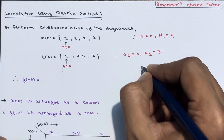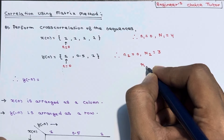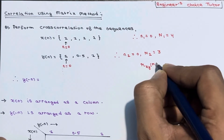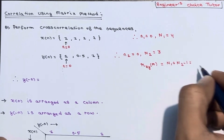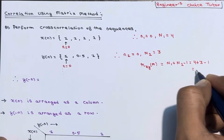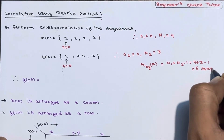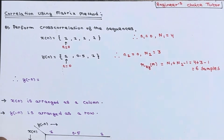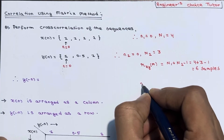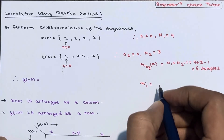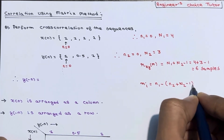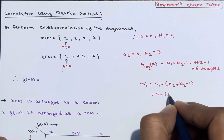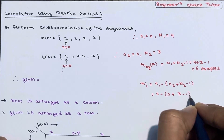The cross-correlation r_xy(m) will have how many samples? The formula is N1 + N2 - 1, so 4 + 3 - 1 = 6 samples. The result should contain 6 samples. The initial value of m, represented as m_i, uses the formula: n1 - (n2 + N2 - 1), which gives 0 - (0 + 3 - 1) = -2.